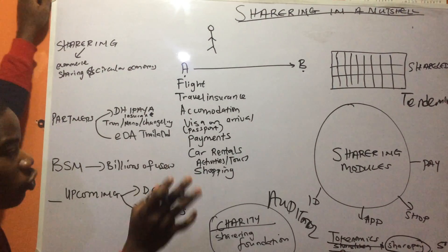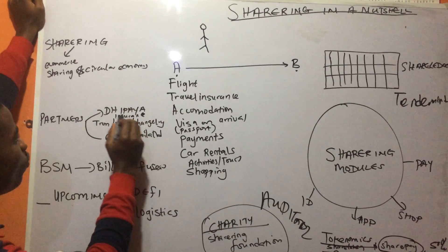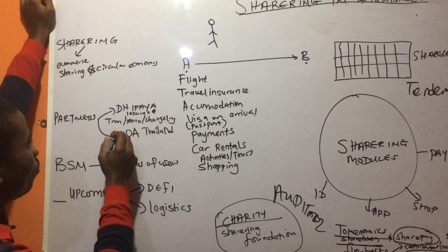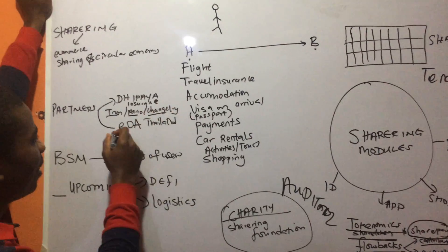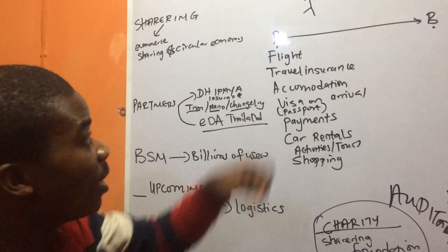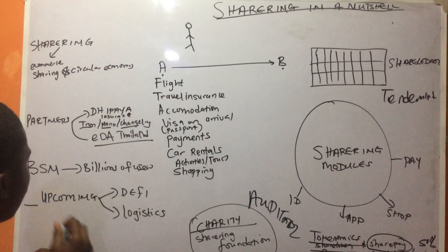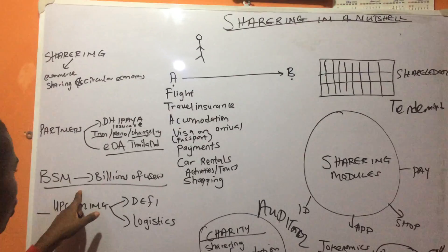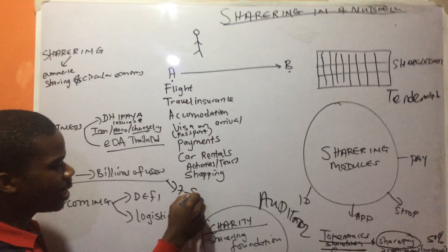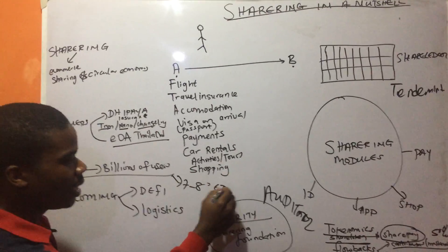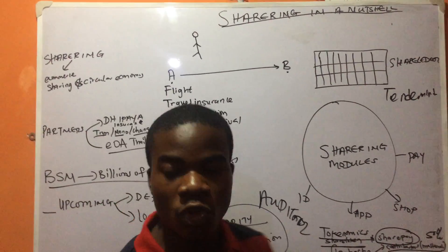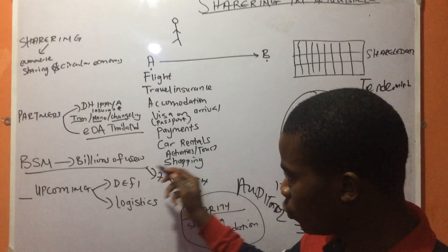Let's talk about some of the partners. There is DPR Insurance, the government-owned insurance in Thailand. There are also the likes of Tron, Nano, SHV, and various visa and flight booking companies. They also have a partnership with the China Blockchain Network, which includes around seven to eight partners such as Ethereum and NEO. We are talking about billions of users that could be brought through this ecosystem.